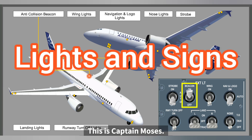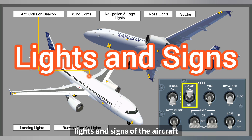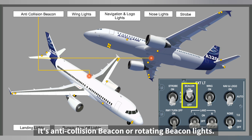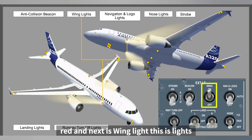Hello everyone, this is Captain Moses and I'd like to discuss how to operate lights and signs of the aircraft. The first light is the beacon light, an anti-collision or rotating beacon light — one on top and one on the bottom, color red. Next is the wing light, which illuminates the wing and engine side.